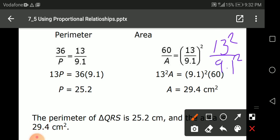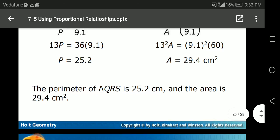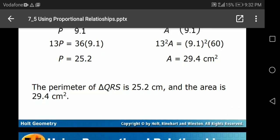So you've got here 13 squared times A equals 9.1 squared times 60. How can I solve it? 13 times 13 and 9.1 times 9.1. Squared means the number is doubled. Then the answer gives you 29.4 after calculations. This is for the area and this is for the perimeter.